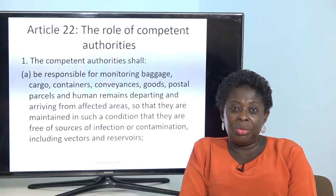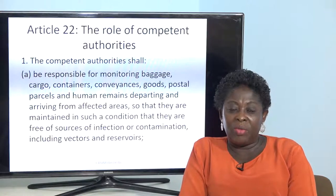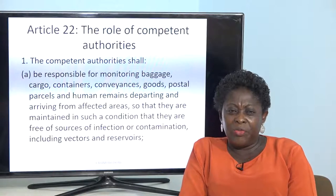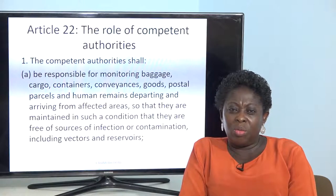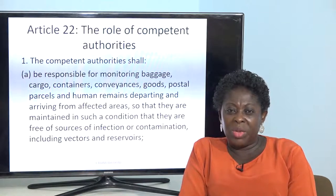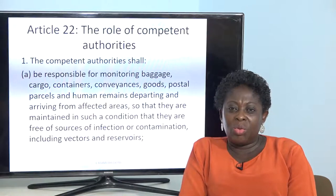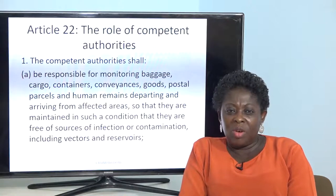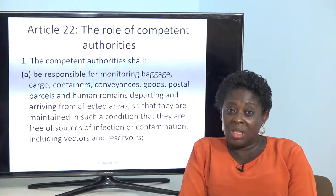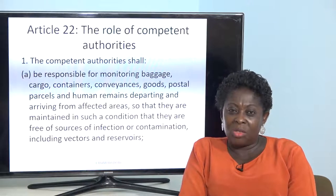Article 22 talks about the role of the competent authorities. Their roles include: first, being responsible for monitoring baggage, cargo, containers, conveyances, goods, postal parcels, and human remains departing and arriving from affected areas, so that they are maintained in a condition free of sources of infection or contamination, including vectors and reservoirs. The aim of the monitoring is to make sure these items are free of sources of infection or contamination, and free of vectors and reservoirs.